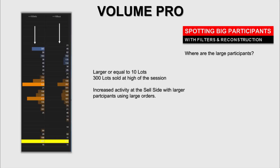Here we can see two volume pro columns and we applied a filter of 10 or more. As we can see at the high of that profile, we see the sell — those 301 sold at the high — coming from traders who use more than 10 lots. It's a very simple calculation but at the same time provides very useful information as to where the traders that trade with 10 lots or more are active. You can clearly see that the profile displays much more activity on the sell side.